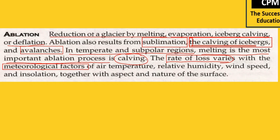The meteorological factors include: air temperature — if the temperature is more, melting will be more; if less, melting will be less. Relative humidity — if the amount of water vapor is very high and humidity is at 100%, more snowfall and accumulation will take place, so ablation will be relatively less. Wind speed can cause friction and a little melting of the glacier. Insolation — if sun rays are coming in high amounts, more ablation will take place; if insolation is less, less ablation will occur.